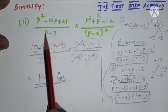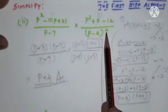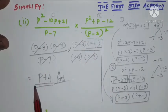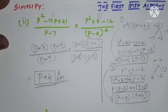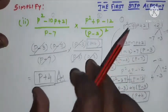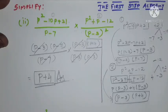The problem was to simplify (p squared minus 10p plus 21) divided by (p minus 7), multiplied by (p squared plus p minus 12) divided by (p minus 3) whole squared. We simplified this expression and the answer is p plus 4. The key steps were: factorize the given polynomials, substitute in the suitable place, cancel the possible values, and get the answer. Thank you.